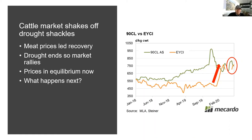Looking at what happens next: the market is going to come under pressure in Australia, because the artificial support of low numbers going through the market and strong restocker demand will change in the spring — more numbers will come on board and prices will come back. But we don't think it will collapse, because meat is something people have to buy. China now looks like it's coming out of its COVID problem, and their consumers will be looking to continue their red meat consumption.